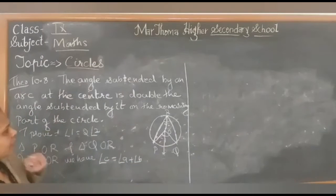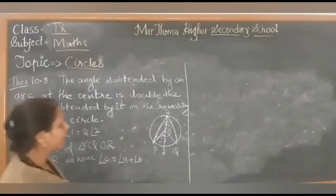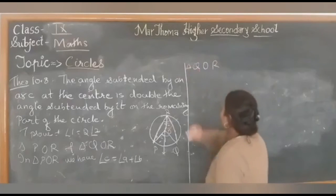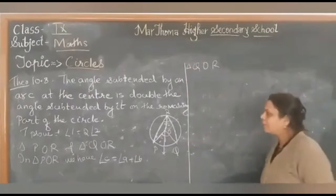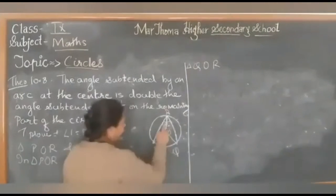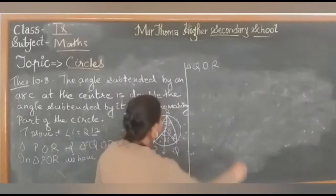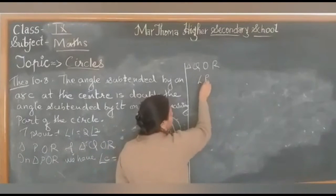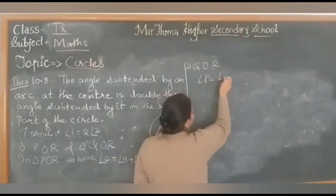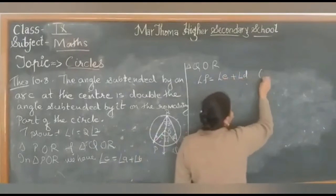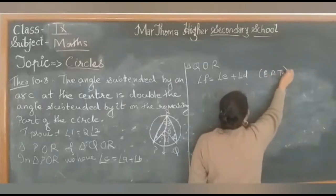Now consider the second triangle QOR. For this triangle, we can mark the angles as D, E, and F. By the exterior angle theorem, angle F equals angle E plus angle D.